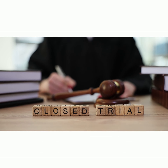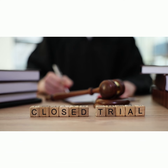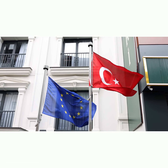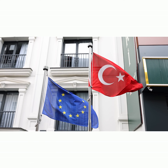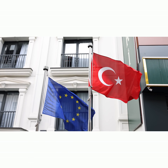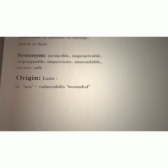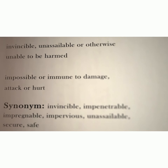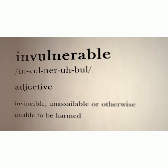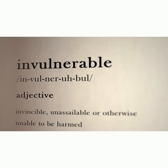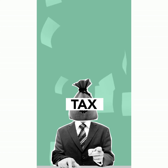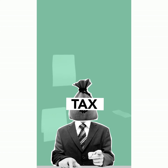Inviolability of diplomatic premises: the premises of diplomatic missions, such as embassies or consulates, are considered inviolable under international law. This means that host country authorities cannot enter these premises without permission from the sending country's government. Diplomats and their families are also often exempt from paying taxes and customs duties in the host country.